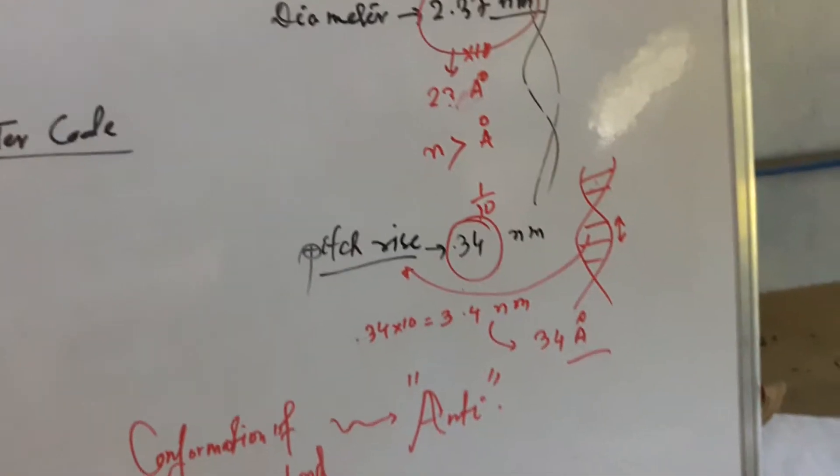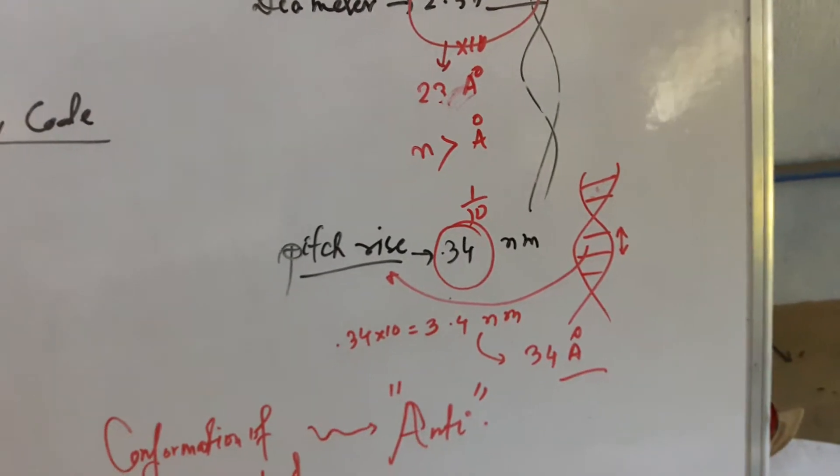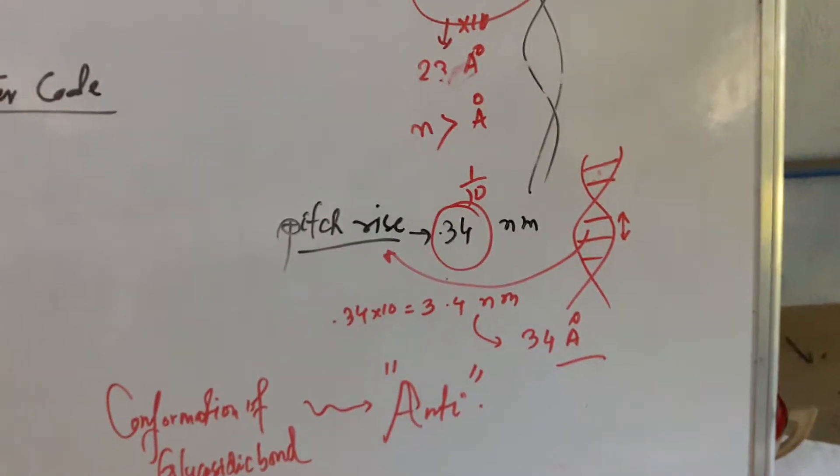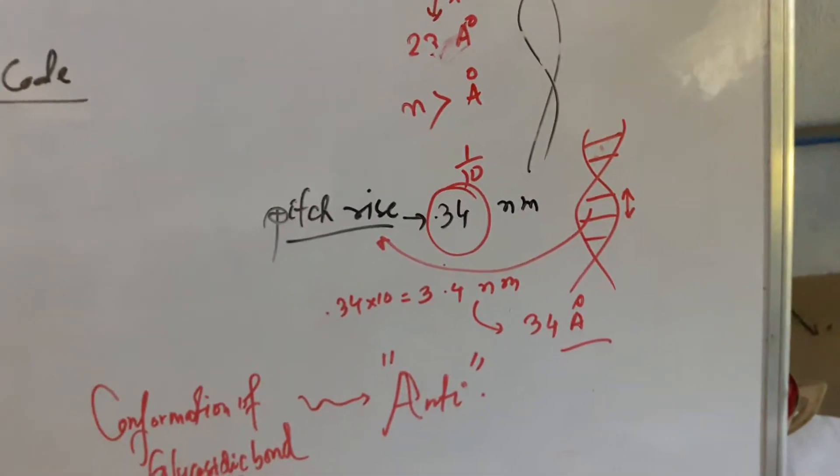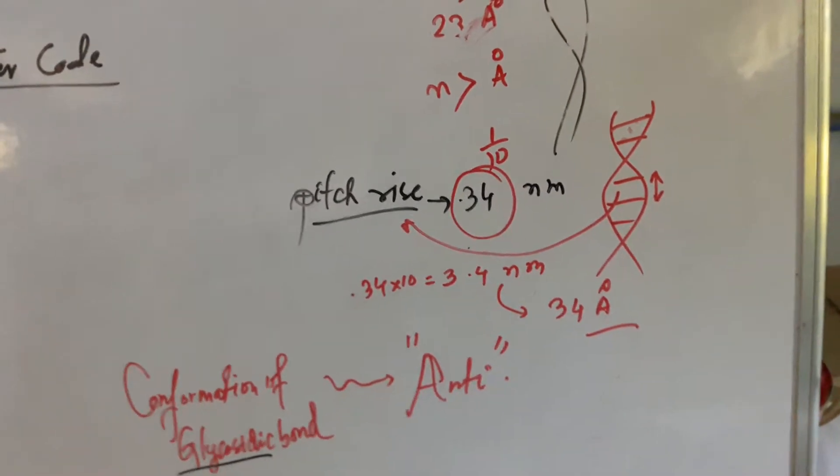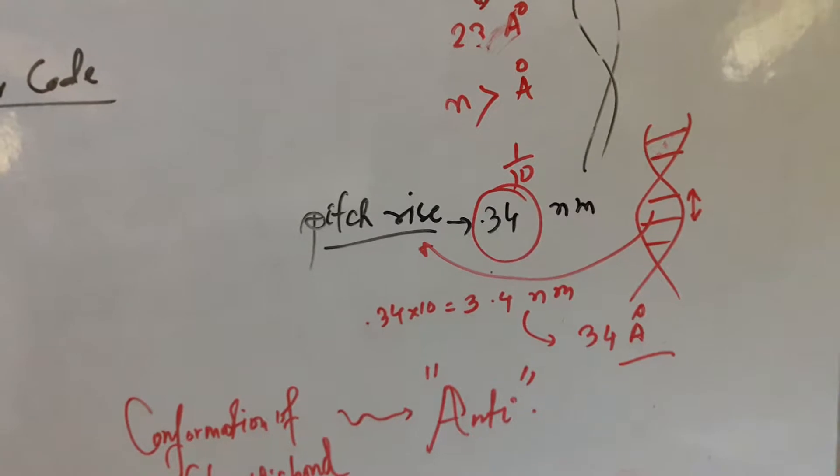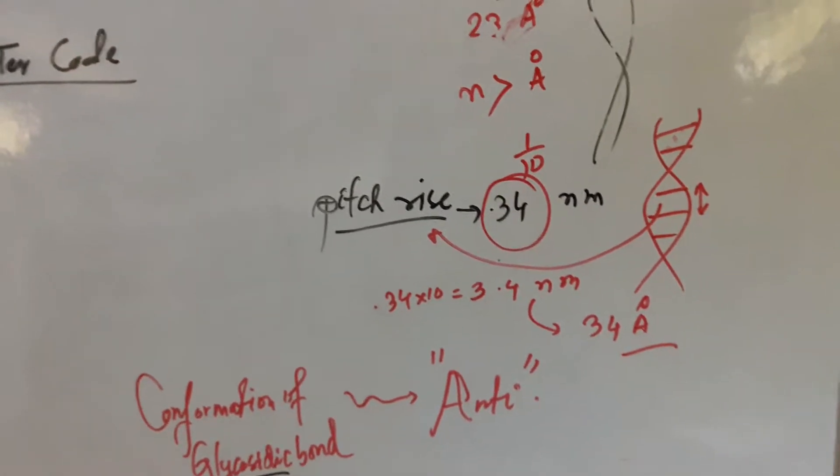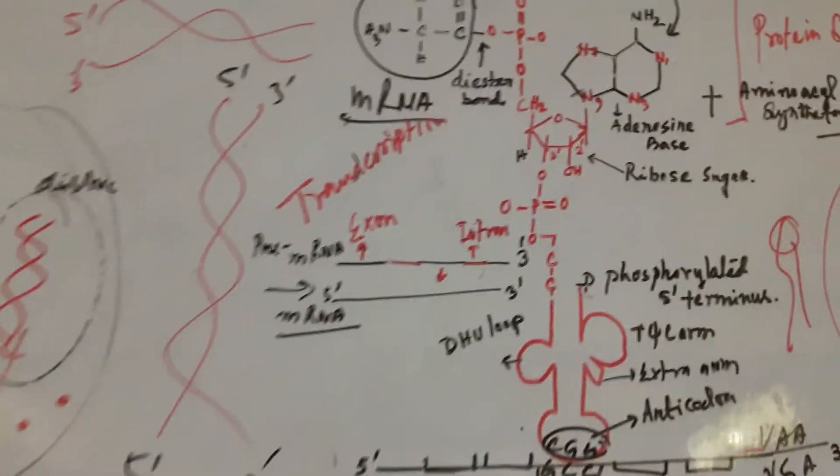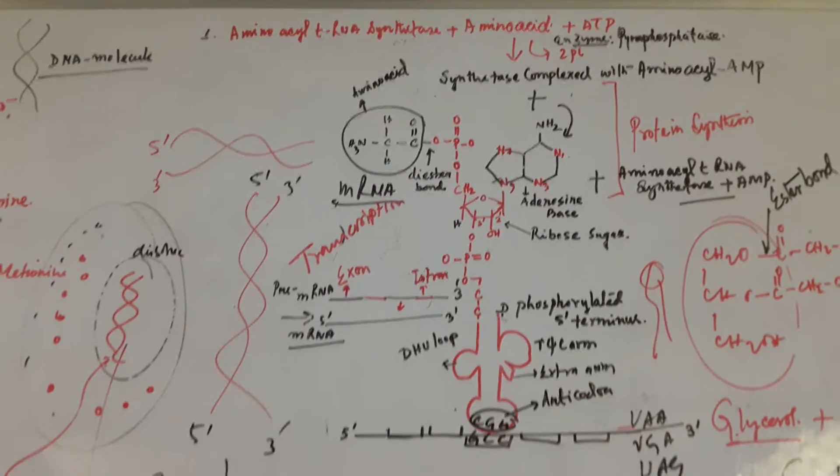I have shown the conversion and the pitch rise from two consecutive nucleotide base pairs is 0.34. So if you convert, you will see this is 34 Angstroms in the whole turn, the length of the turn.